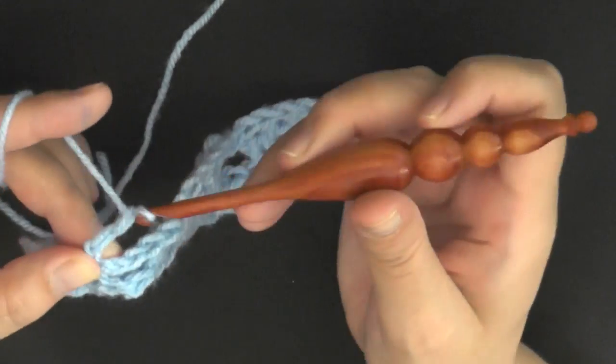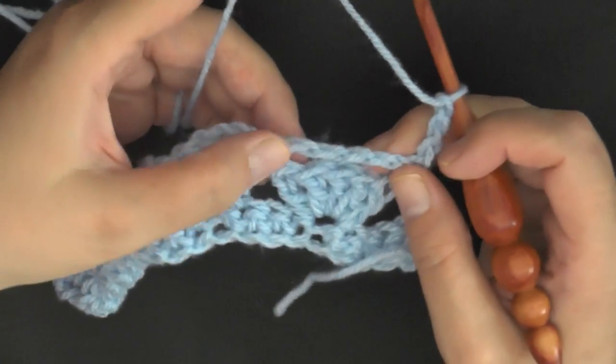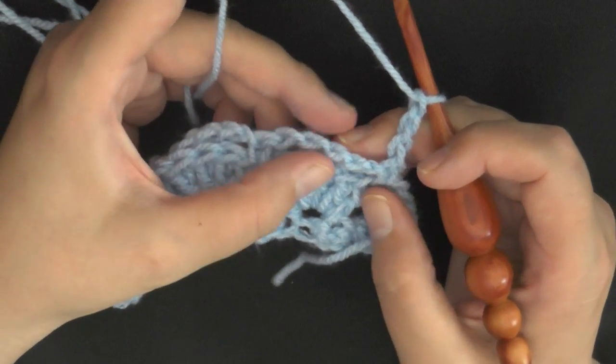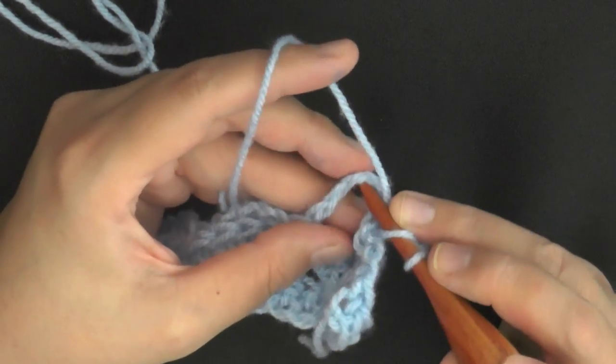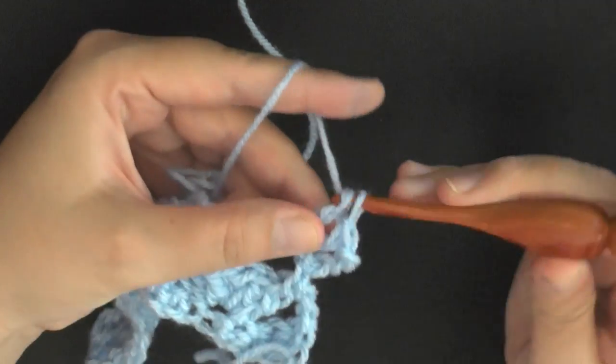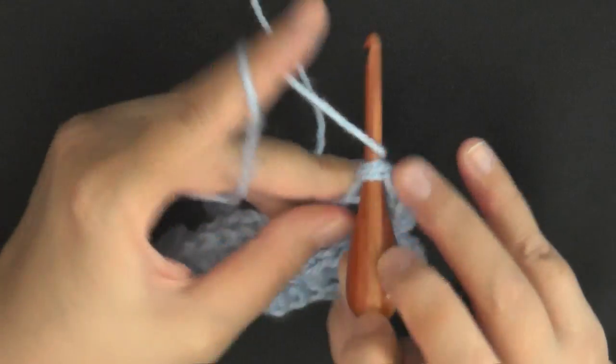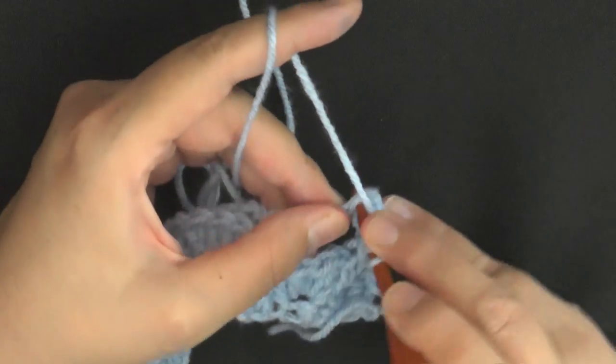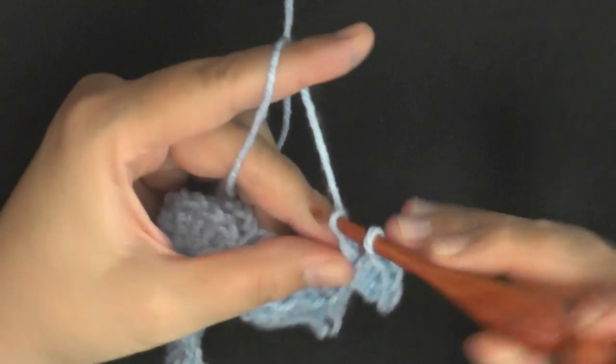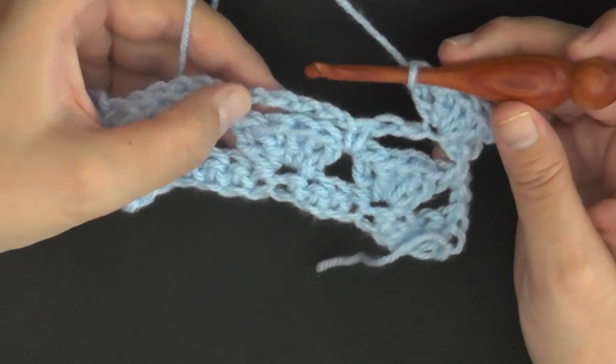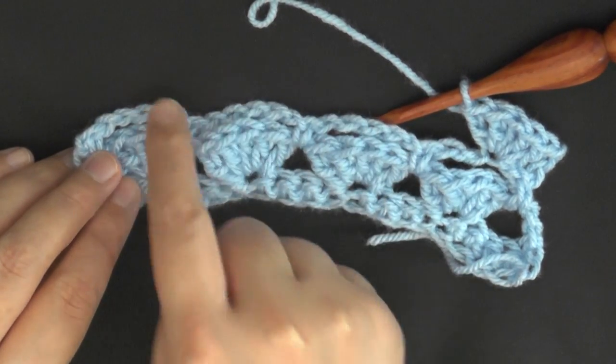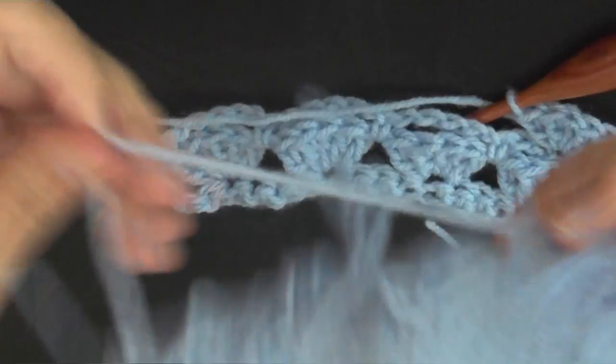So for row four, you're going to chain three again, one, two, and three, turn. And now the center chain of your chain five, so there'll be two chains on this side and two chains on this side, find that center chain, which mine is here, and you'll be putting your shell in that center chain. So you'll put five double crochets all worked into that same chain stitch. Then you'll start your next shell in the center of the chain of the next, and then the center of the chain of the next. You'll do that for all your chains down the row, no need to chain in between or anything like that, just start working your shells all the way down your row.